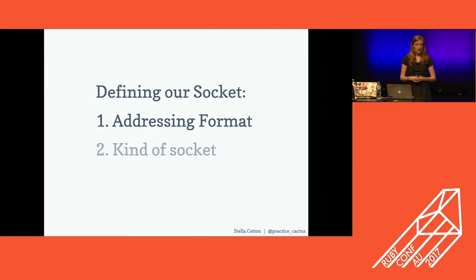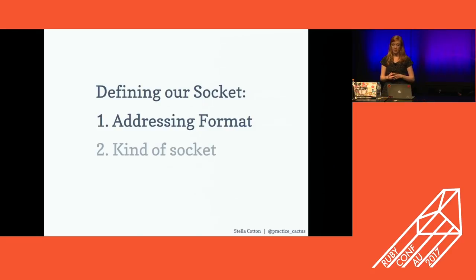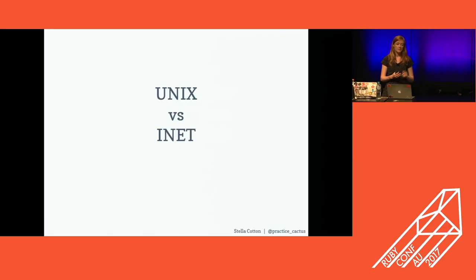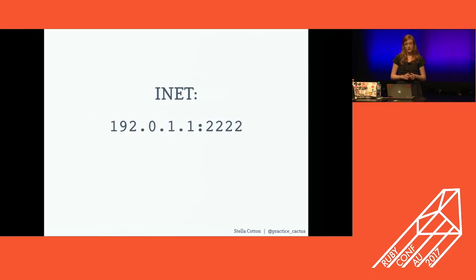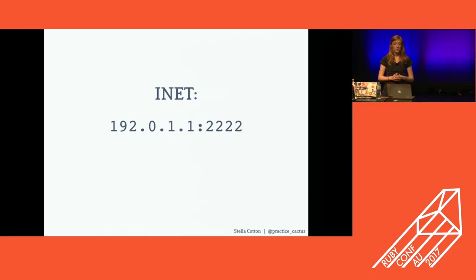We're not just opening any socket — we're opening a very specific socket capable of accepting web traffic. To create a web socket, you need to choose your addressing format. The two most common formats are Unix and Internet. Unix sockets use a path name on the file system so two programs on the same machine can talk. Internet sockets use an Internet address so anyone can talk to that process on your machine. We're going to use an Internet socket because we want the outside world to talk to us.